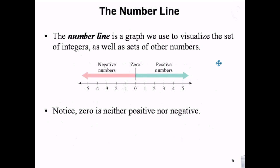You've all seen the number line before. Zero is in the middle of the infinite number line. Positive numbers always go to the right, negative numbers always go to the left. Zero is not positive or negative — it's neutral.